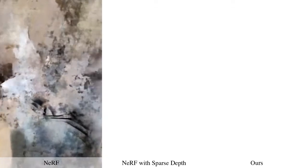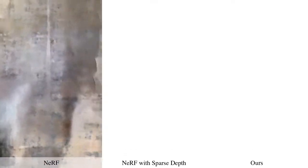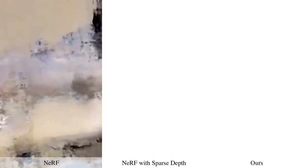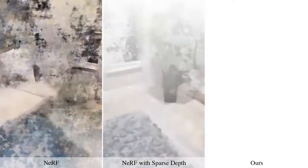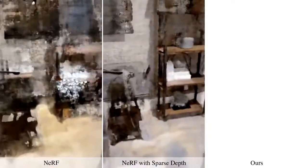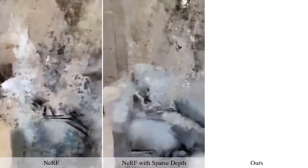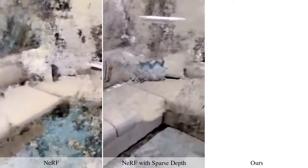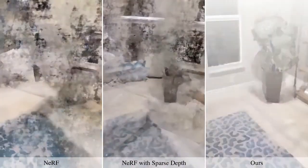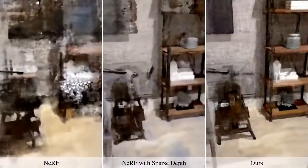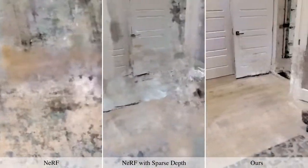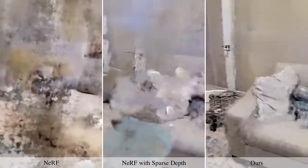Given 24 images of an entire room, NeRF is unable to resolve scene ambiguity, resulting in many artifacts. Providing sparse depth supervision helps; however, artifacts still remain in the unsupervised regions. Supervising with dense depth priors and uncertainty produces an accurate scene representation and much higher image quality.